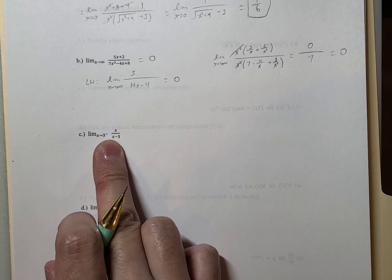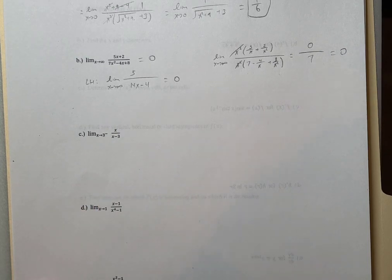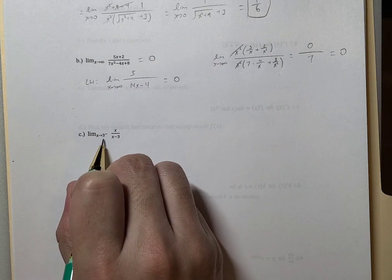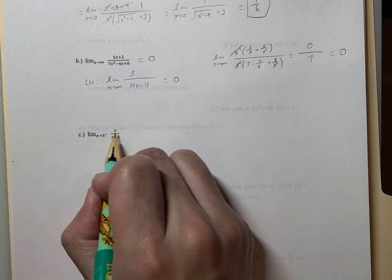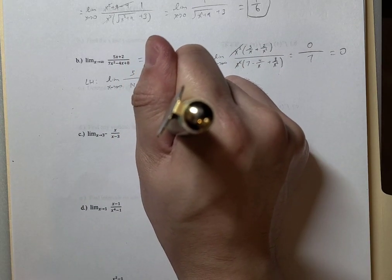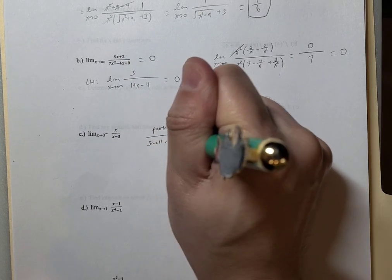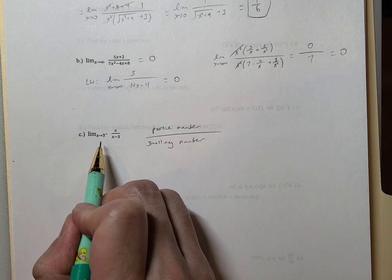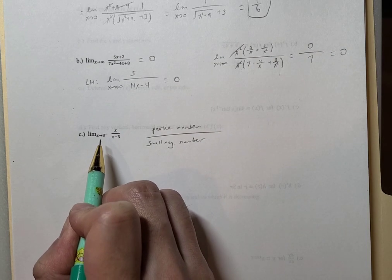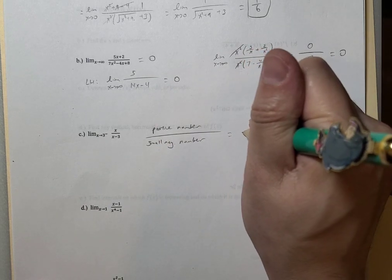For the limit as x approaches 3 from the left of this expression: what happens when x is 3? We get 3 divided by 0, so there's a vertical asymptote there. We're finding out whether it goes to positive or negative infinity. When x approaches 3 from the left, values are like 2.9, 2.99, 2.9999 — values a little bit smaller than 3, never touching 3. The top will always be positive, and the bottom will be a small negative number. So a positive number over a very small negative number gives negative infinity.